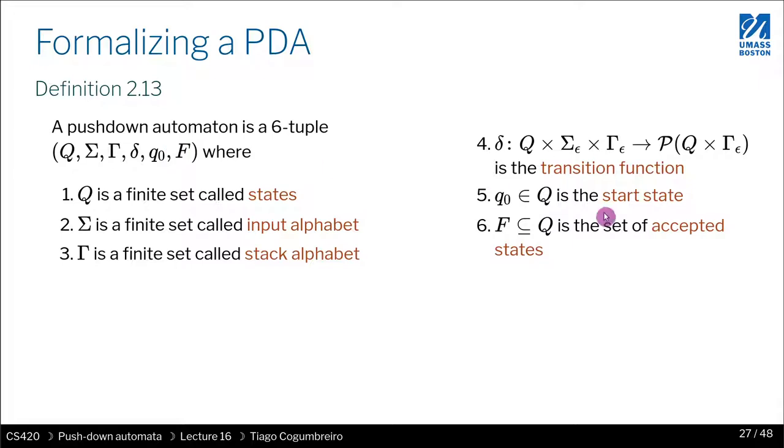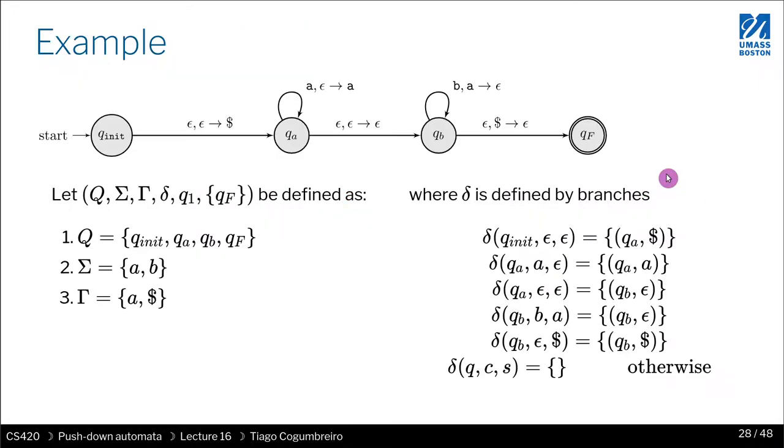So let's look at the transition function by means of examples. If I wanted to specify this automaton formally, what are my states? My states are q_init, q_a, q_b, and q_f, which are written here. So it's this set.